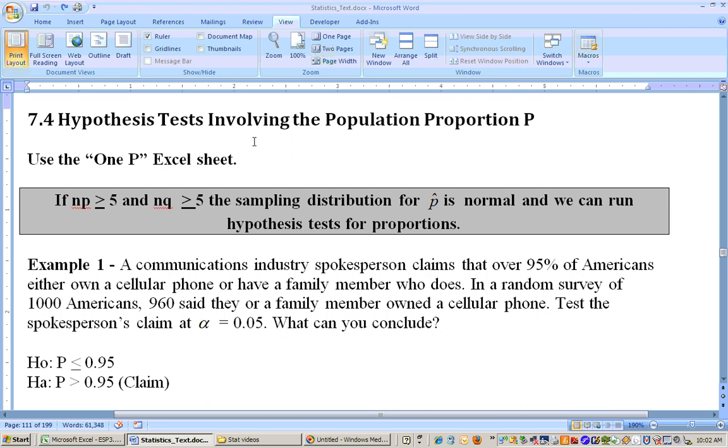This is section 7.4 on hypothesis tests for the population proportion P, and we'll be using the 1P Excel sheet to do this. First of all, if n times P and n times Q are greater than or equal to 5, then you have a normal distribution that's approximately normally distributed, and you can run the problem.